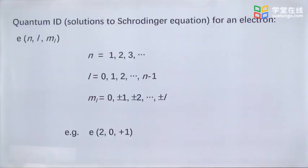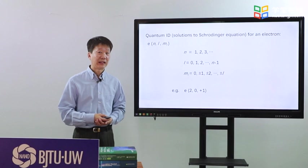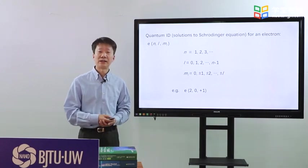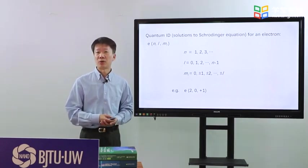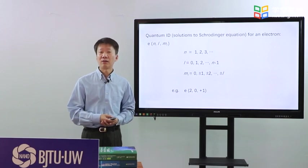Now, we know that Schrodinger equation tells us that an electron has an ID, quantum ID, of quantum numbers N, L, ML.